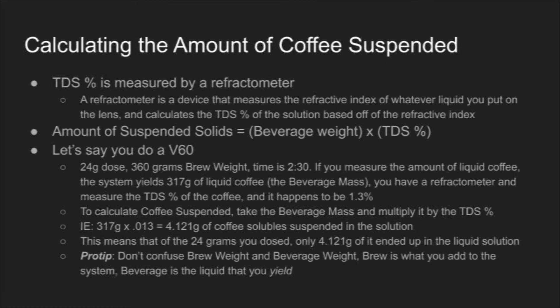What is a refractometer? A refractometer is a device that measures the refractive index of whatever liquid you place on top of the lens, and it calculates the TDS percentage of the solution from that refractive index. Essentially, there is a lens, you put liquid on it, it shoots a laser through it, measures the angle, and by measuring that angle it gives you a TDS percentage — the overall strength of the solution.